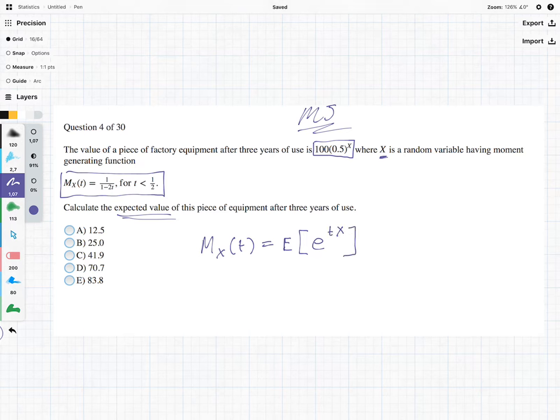I think we're all happy with that. So what we can do is if we look at the expected value, so the expected value of this piece of equipment, which is given by this over here. If we do this, 0.5 to the x, we see straight away we can just take that 100 out. So we have the expected value of 0.5 to the x.